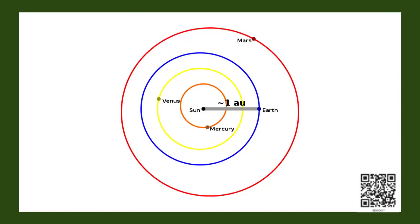So scientists came up with a new unit called the astronomical unit, which represents the distance between the sun and the earth.